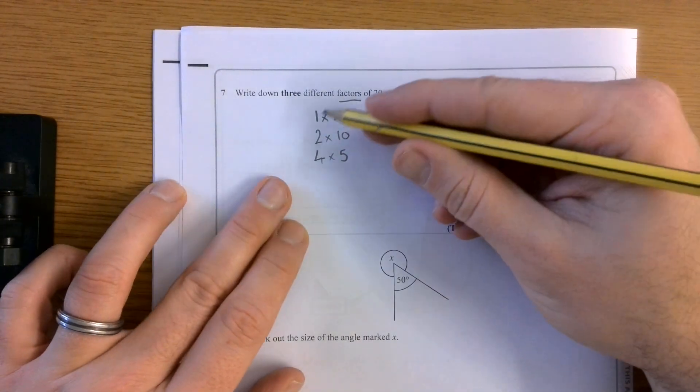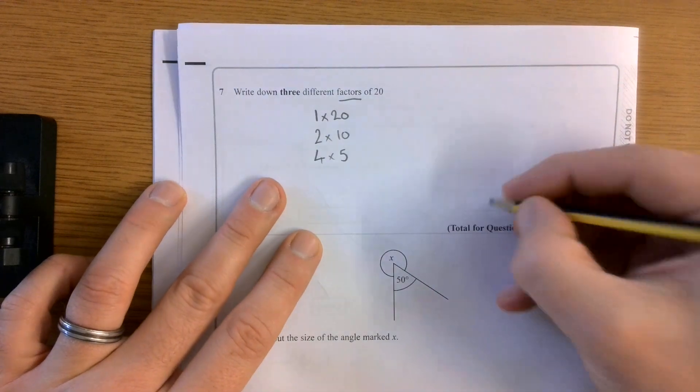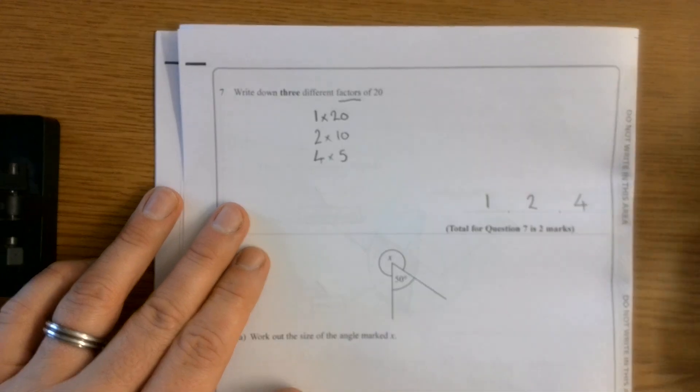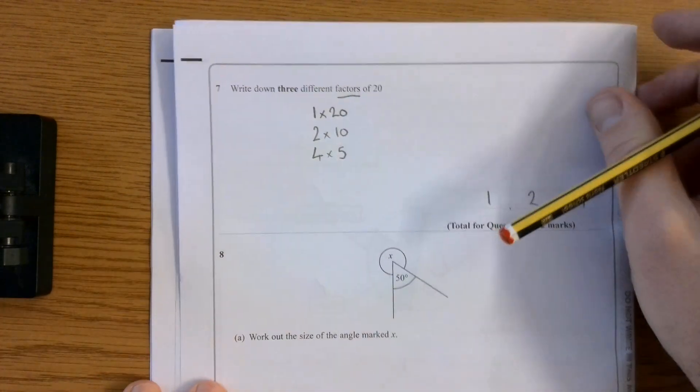So now I've got to pick any. I've got six factors written down. I just need to pick any three of them. So I'm going to go 1, 2 and 4. Any combination of those numbers would be correct.